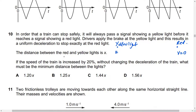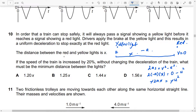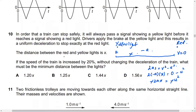Initial velocity is u, deceleration means acceleration is minus a, final velocity is zero, and the displacement is x. Using this information we construct the equation: 2as = v² − u². We get 2 × (−a) × x = 0 − u², so minus 2ax = minus u squared, and therefore u² = 2ax.